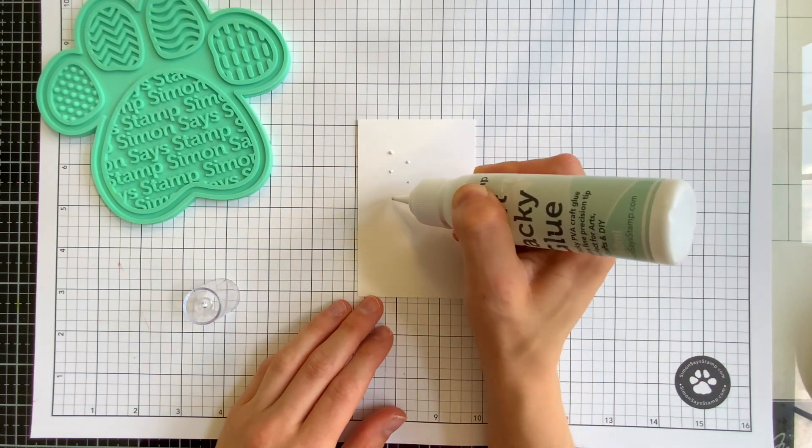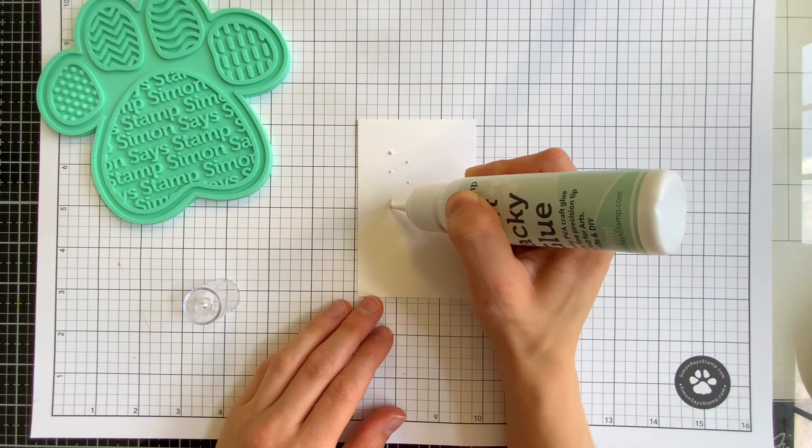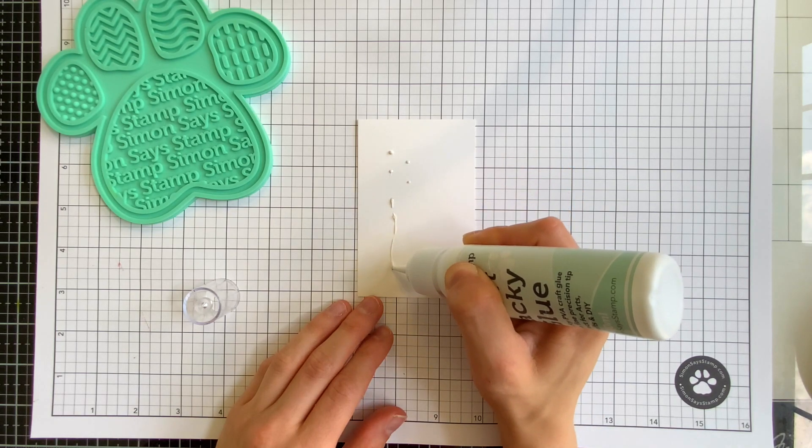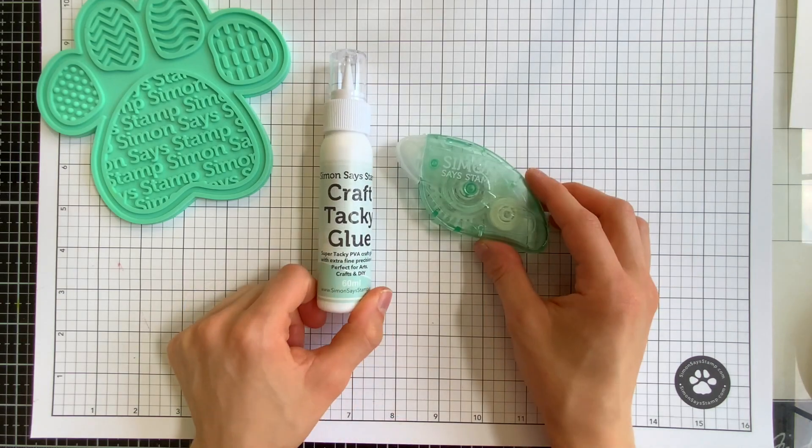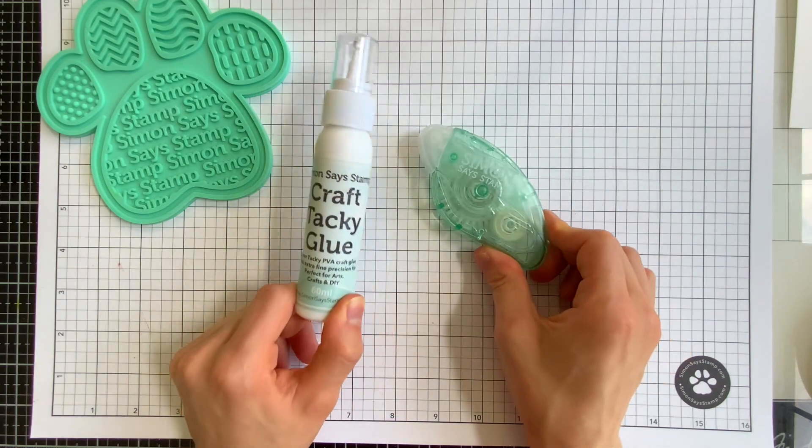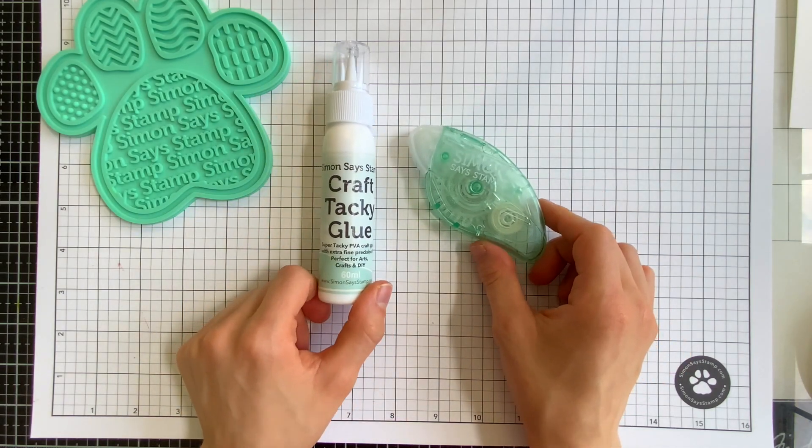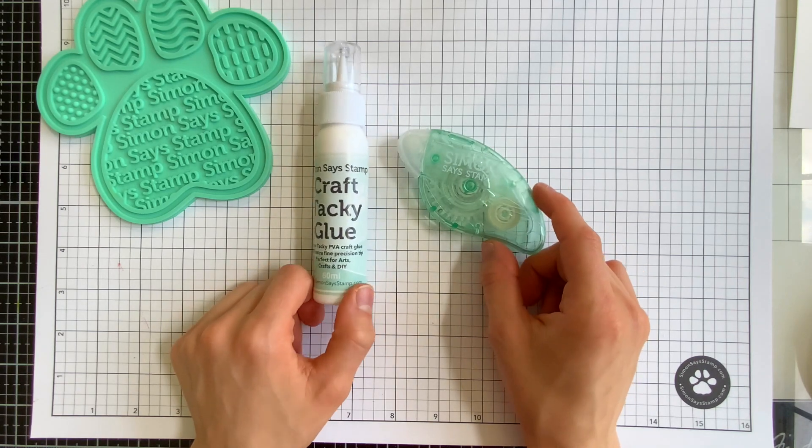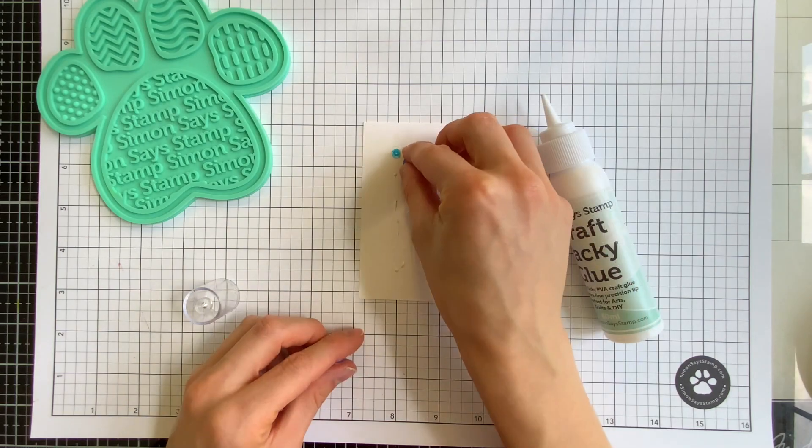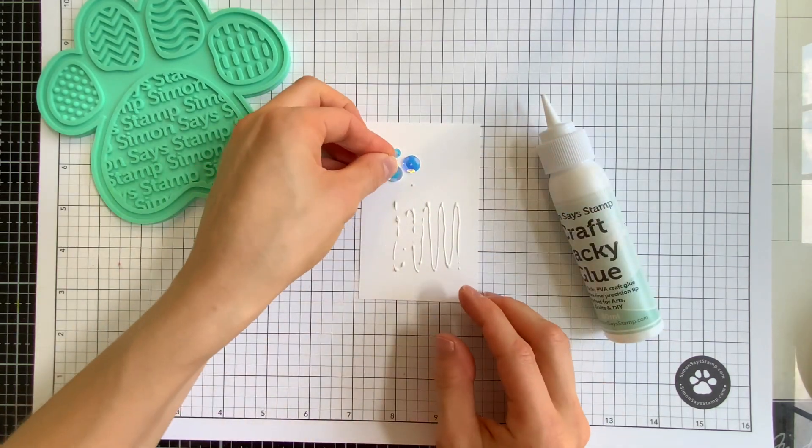Our Simon Craft Tacky Glue comes in a large bottle and it has a detailed tip which is perfect for precision placement and control. It's a perfect complement to our dot runner. Having both adhesive types of tape and a liquid is important because sometimes you can't always use just one exclusively. Liquid glue like this is great for embellishments, small die cuts, and more.